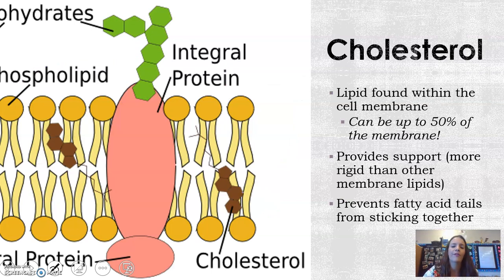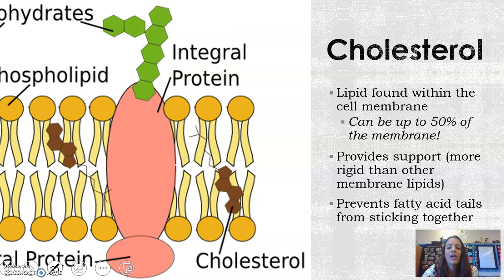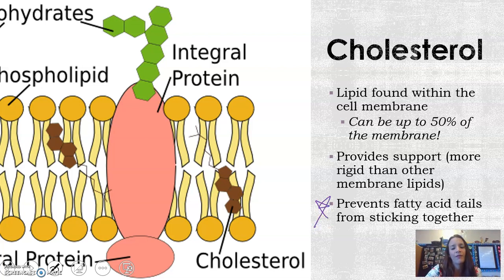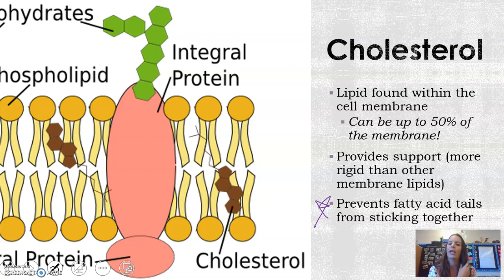Cholesterol is also an important part of the cell membrane. It's a lipid — think back to macromolecules. Cholesterol can actually make up almost 50% of the membrane in some cells, so it does provide support. But more importantly, the function to focus on is that it prevents the fatty acid tails from sticking together. Think of cholesterol almost like a conditioner for hair — it keeps those tails from knotting up.